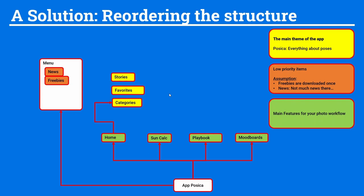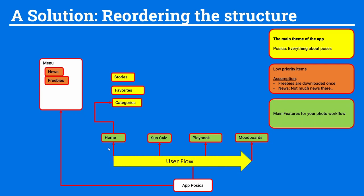Now we have a pretty good structure that supports the main user flow. You first select your poses, then select the date for the wedding, then decide how to interact with the couple — maybe pick some fun things from the playbook — and then put it all into a collected mood board for the special date you're planning.